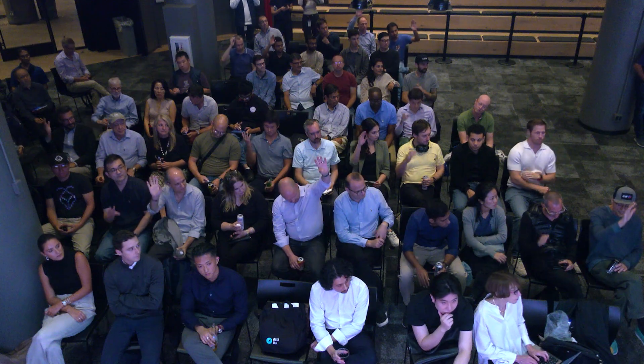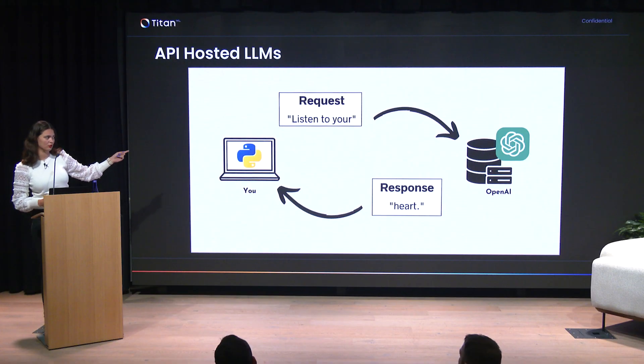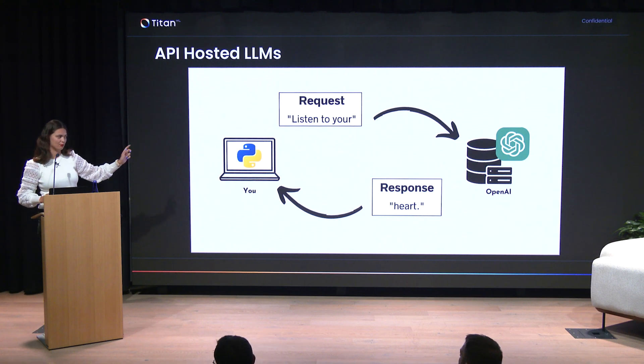Put your hand up again if you've also used an API more generally — okay, that's pretty much everyone. So you should be fairly familiar with what it means to interact with AI models through an API. Essentially, you send a request to a language model, which is hosted on their servers, and they bring back a response. There are two key things about API-hosted language models: the model is one of a small number of their proprietary models, and it's hosted on their server.